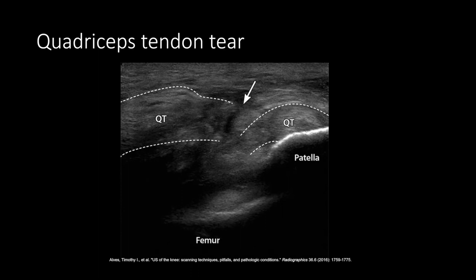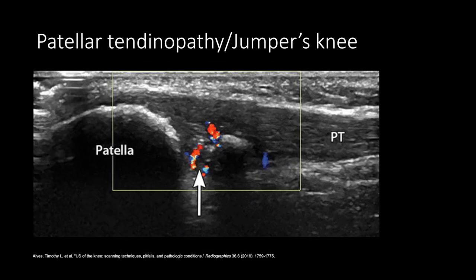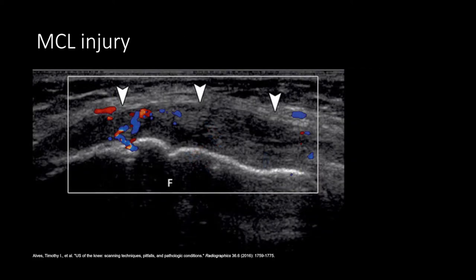This is a full thickness quadriceps tendon tear. The longitudinal view shows a hypoechoic defect between the proximal and distal stumps of the quadriceps tendon. This is a longitudinal color Doppler view of the patellar tendon which shows thickening, heterogeneity, and hyperemia of the proximal patellar tendon. This is a long axis color Doppler view of the MCL where you can see thickening, increased vascularity, and hypoechogenicity denoted by the arrowheads, consistent with a sprain.